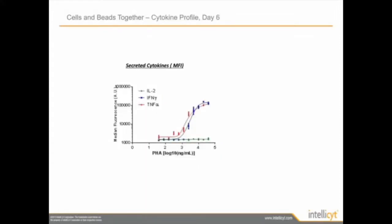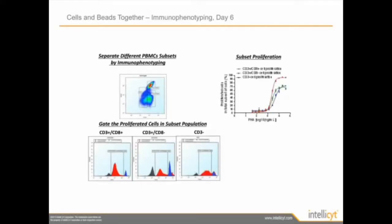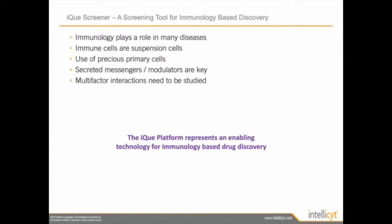At the six-day time point, the researcher was able to see interferon gamma and TNF alpha production, but not IL-2. They speculated that at day six, IL-2 is either degraded or reabsorbed by the cell. At day six, the researcher was able to see PBMC proliferation — up to 80% of the cells were proliferating at the highest concentration of PHA. For the different cell subsets, the researcher was able to observe cell proliferation and generate really nice dose response curves. Interestingly, CD8 positive cells proliferated the most and CD3 negative cells proliferated the least.